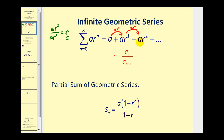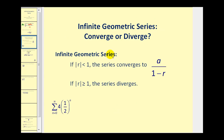The partial sum of any geometric series is equal to a times the quantity one minus r to the n, divided by one minus r. In this video, we want to consider the sum of an infinite geometric series. An infinite geometric series converges if the absolute value of r is less than one, and it converges to a, the first term, divided by one minus r.